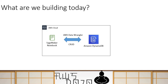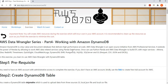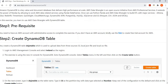So, today we are going to build the following: we will create a DynamoDB table, then launch a SageMaker notebook as a client from where we can write Python code, and then we will use AWS Data Wrangler to perform create and update operations. We have created an exercise for this and uploaded it to aws-dojo.com. I'm going to walk you through the exercise steps, and after that you can run it yourself to get hands-on experience.